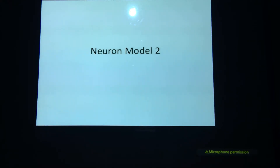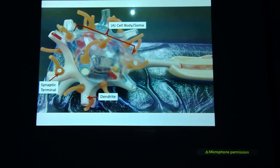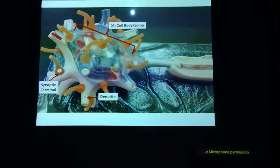Let's look at the second neuron model. As you can see, this neuron model is a bit different than the last one, but you still have that same pattern to it. You've got the big bulbous thing at the top — that's the cell body or the soma.